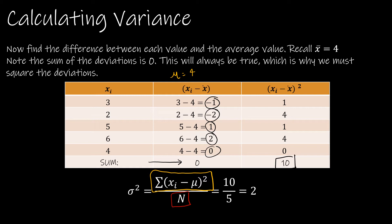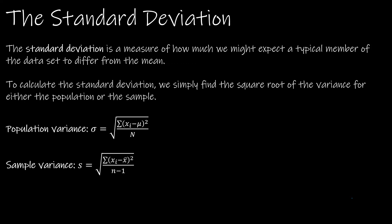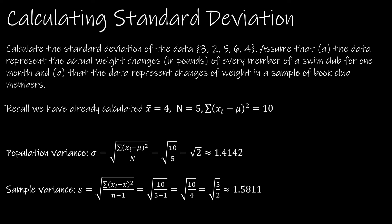The standard deviation is related to the variance. It measures how much we might expect a typical member of the data set to differ from the mean — it's a measure of dispersion. To find it, we simply take the square root of the variance. Inside the square root brackets, the formula is the exact same one we used for variance, for either a population or a sample, and then we take the square root of that value.